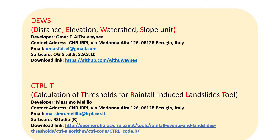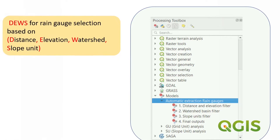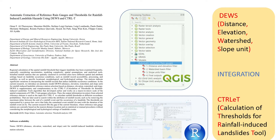DEUCE was developed by myself and is available free to download from GitHub. The CTRL tool for threshold calculation is also free to download, developed by Mr. Massimo. CTRL is a well-known model developed in R, efficient in producing not only thresholds but also the uncertainty related to the scale and the slope of the power law curve. The additional tool I integrated — DEUCE — stands for Distance, Elevation, Watershed, slope Unit, to select the appropriate rainfall gauge close to landslides in terms of those four parameters.